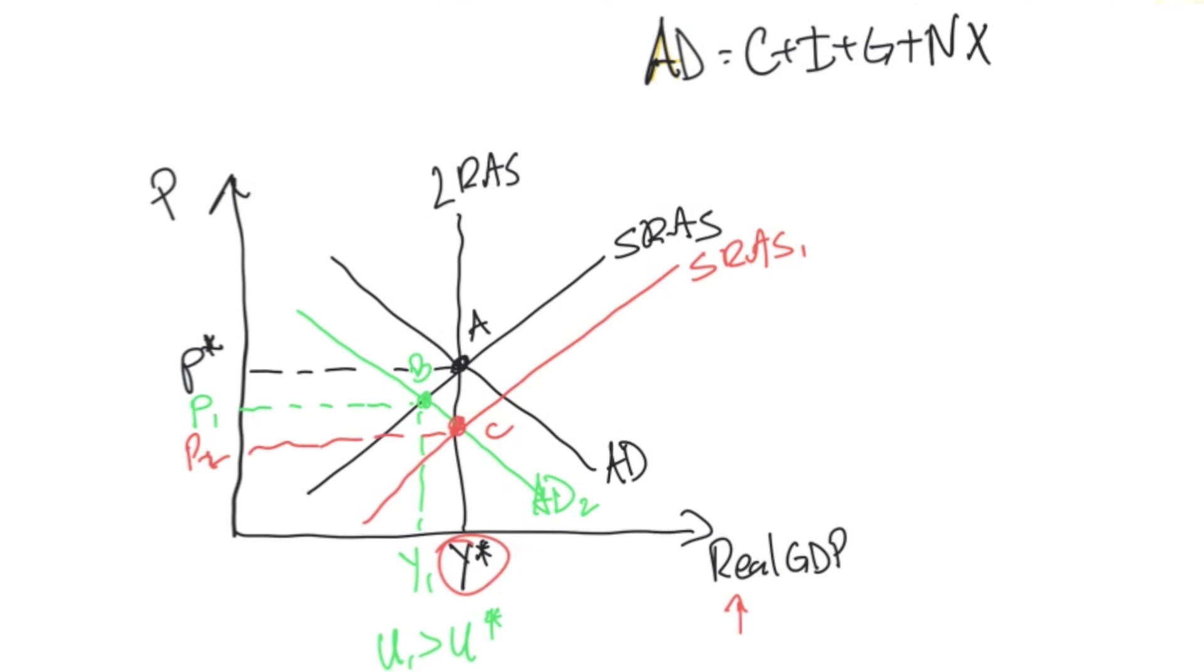The managing force, the thing that adjusts the economy without any government intervention is individuals accepting lower wages when the economy goes into recession. The longer it takes for individuals to start to accept lower wages, the longer we remain in a recession.